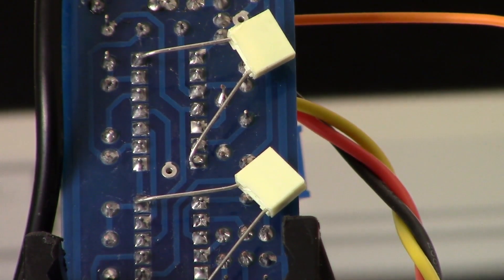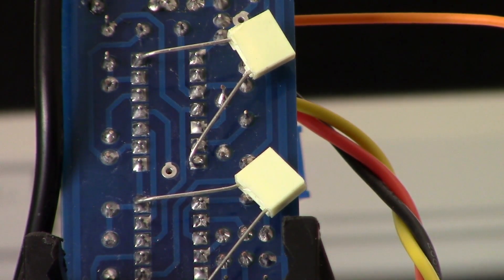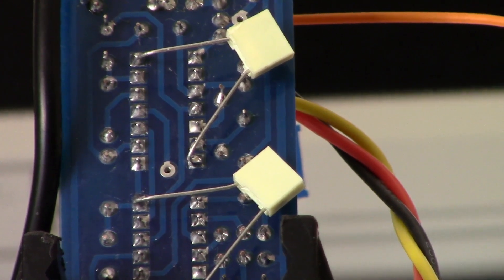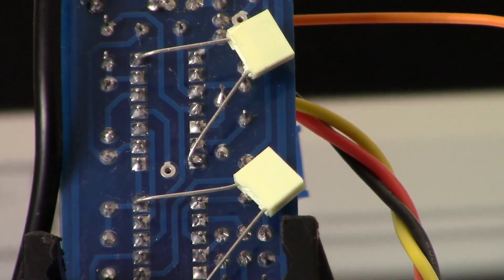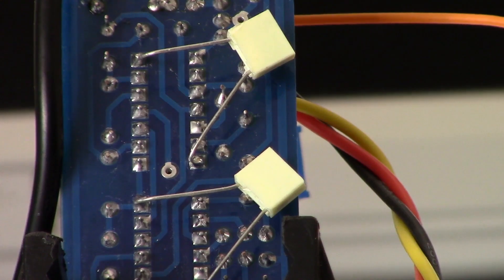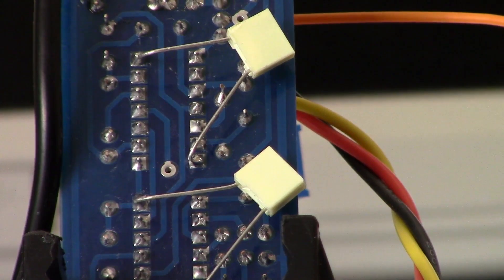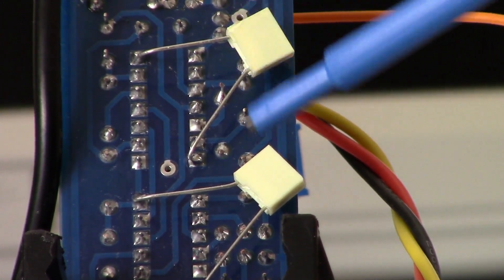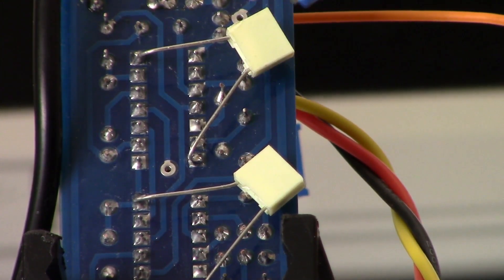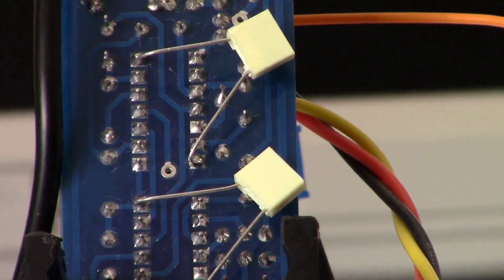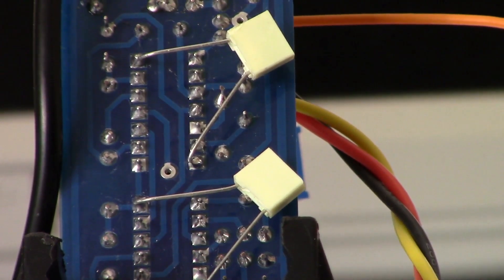Before we jump into the waveforms, I wanted to show a tiny modification that I did. I put a couple of 100 nanofarad decoupling capacitors across the supply pins on the 4093 and the 4066. You can see them here on the reverse side of the board. I think that's a good idea - it reduces some of the noise in the circuit.